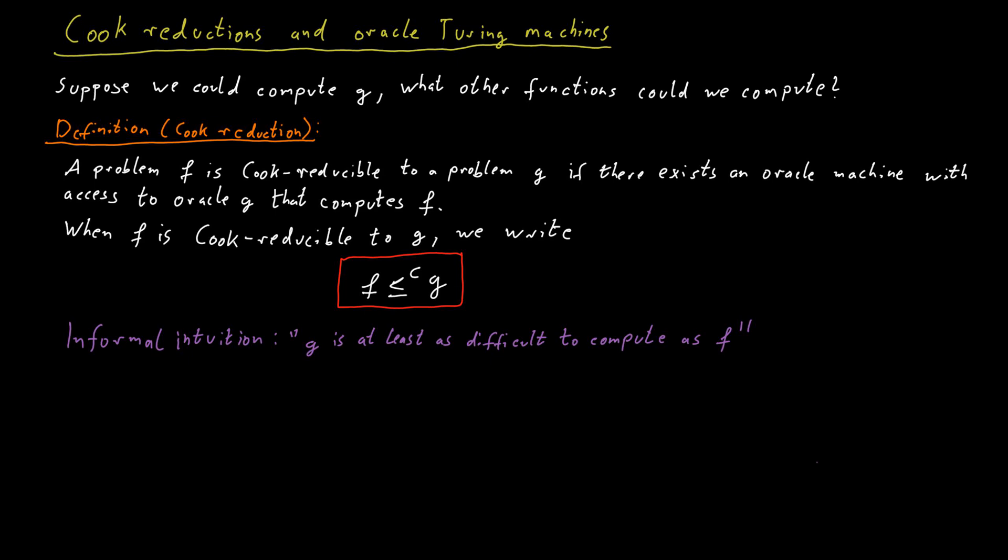If I cannot compute F, I can also not compute G. But if I can compute G, I can compute F as well. So this helps in establishing that problems are not computable. Because suppose we have some function F for which we already know that it is not computable. And then if we have a cook reduction from F to some other problem G, then we know that G is also not computable. So we got a new result that G is not computable just from the fact that F is not computable and there is this cook reduction from F to G.